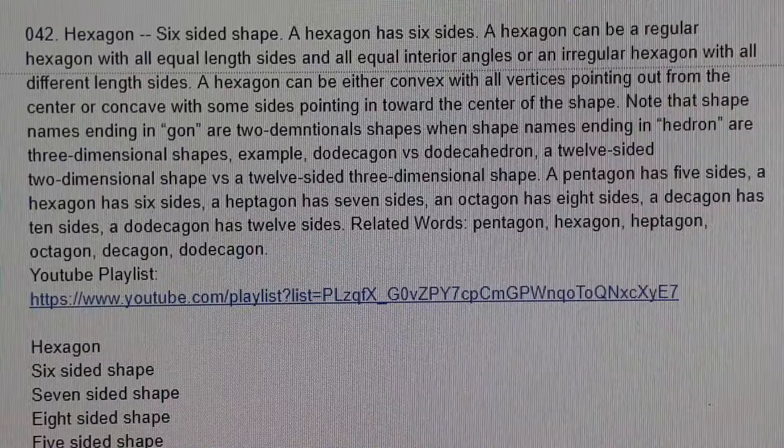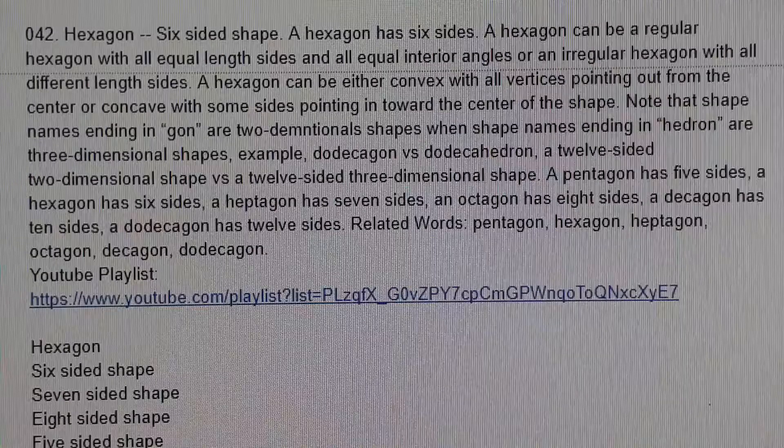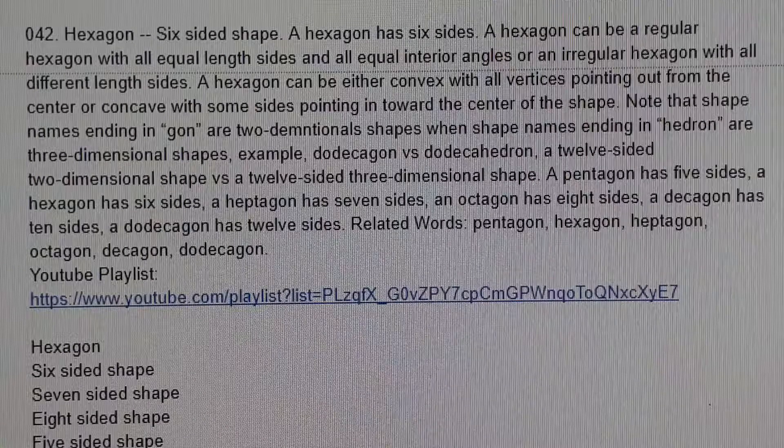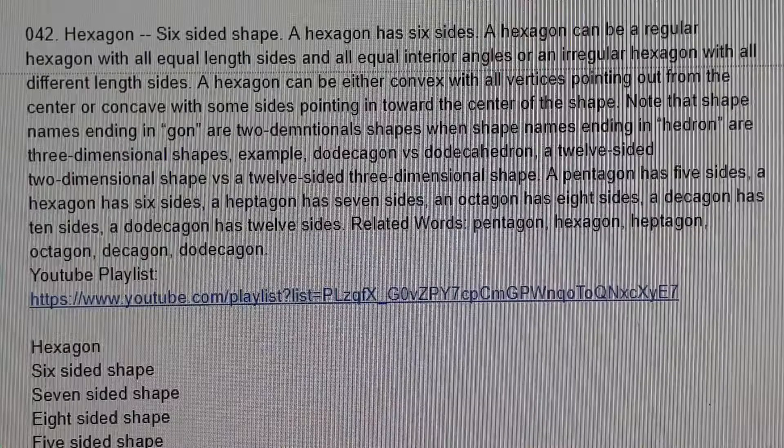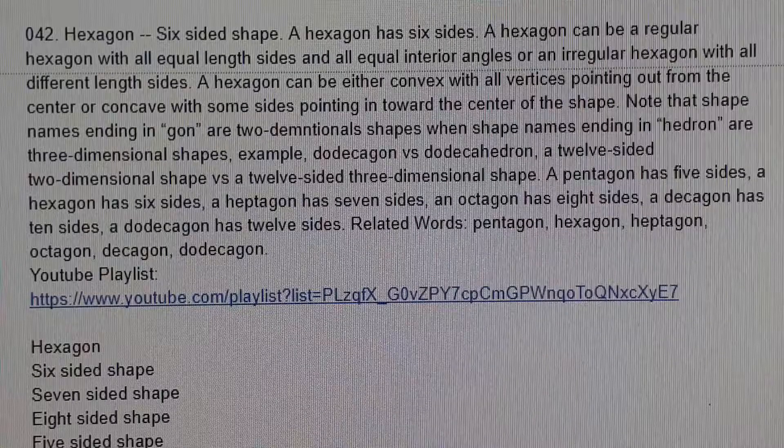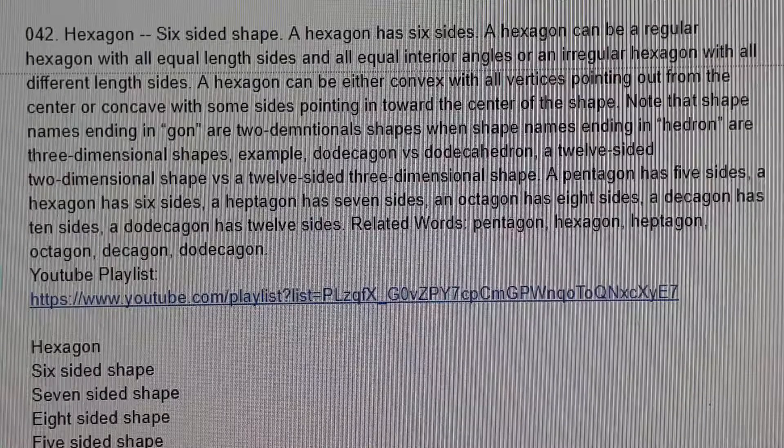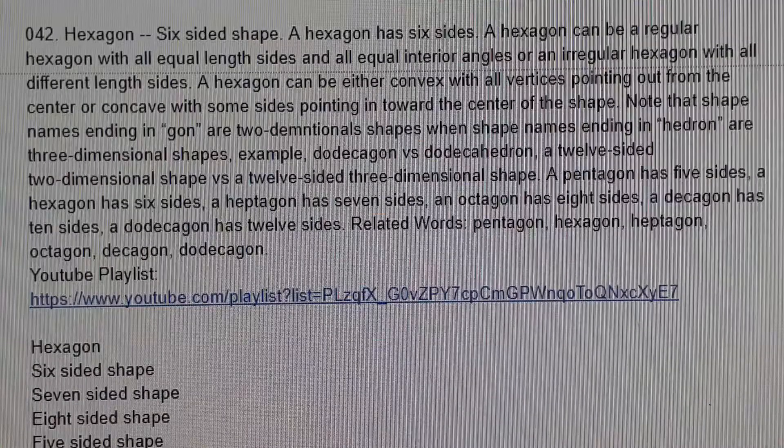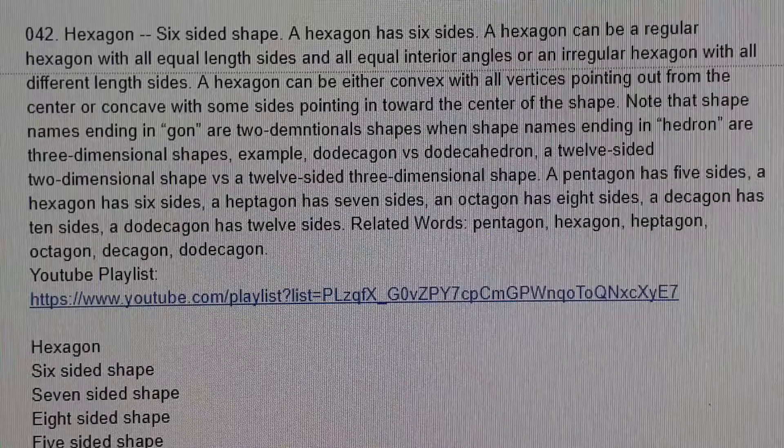Note that shape names ending in 'gon' are two-dimensional shapes, where shape names ending in 'hedron' are three-dimensional shapes. Example: dodecagon versus dodecahedron - a twelve-sided two-dimensional shape versus a twelve-sided three-dimensional shape.